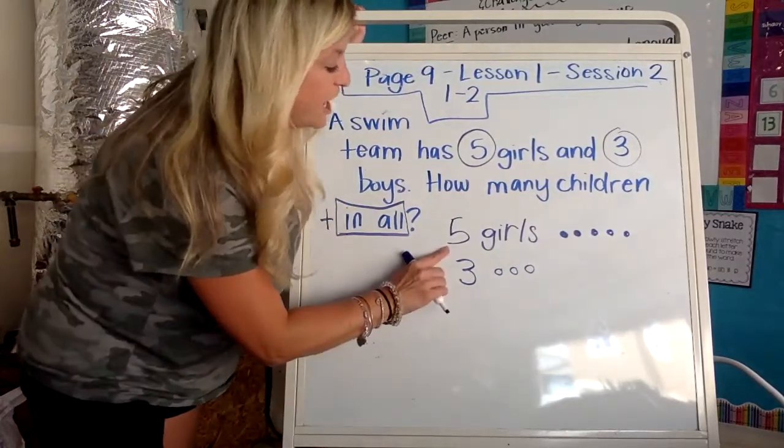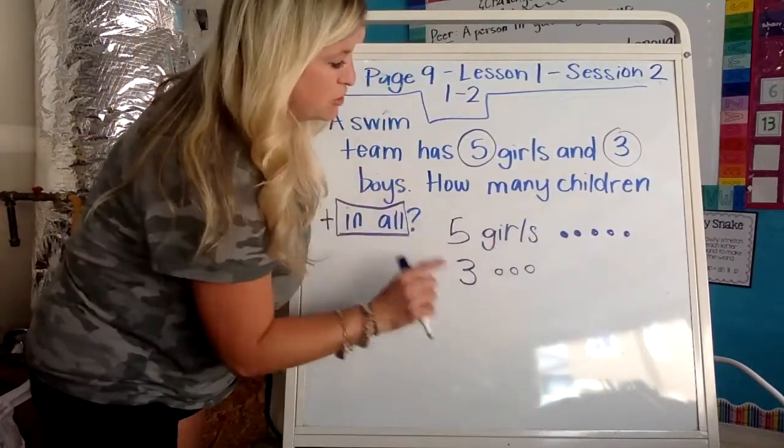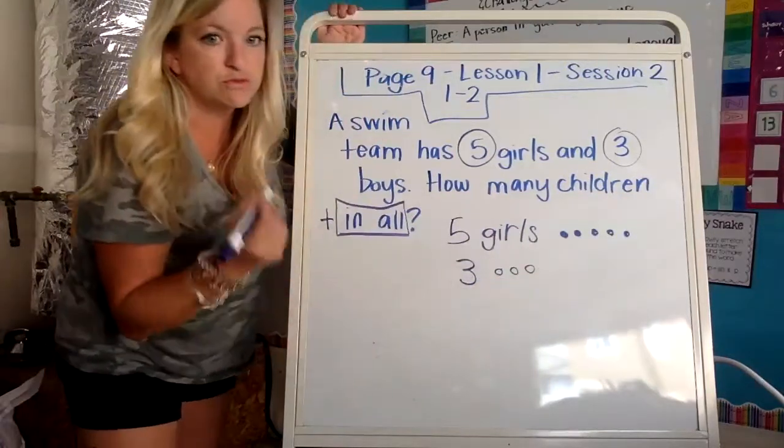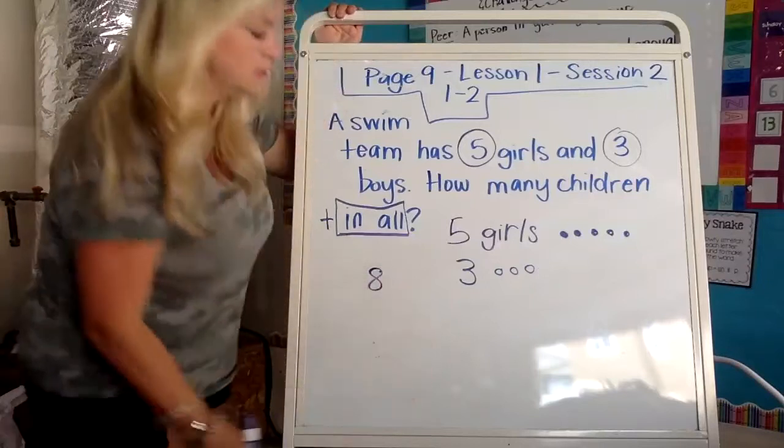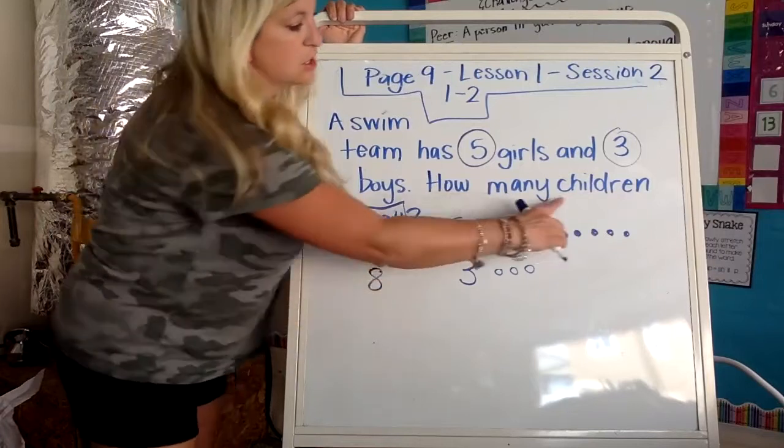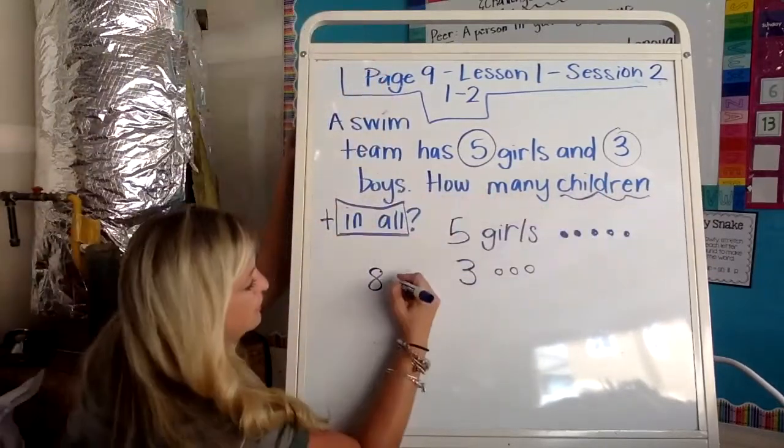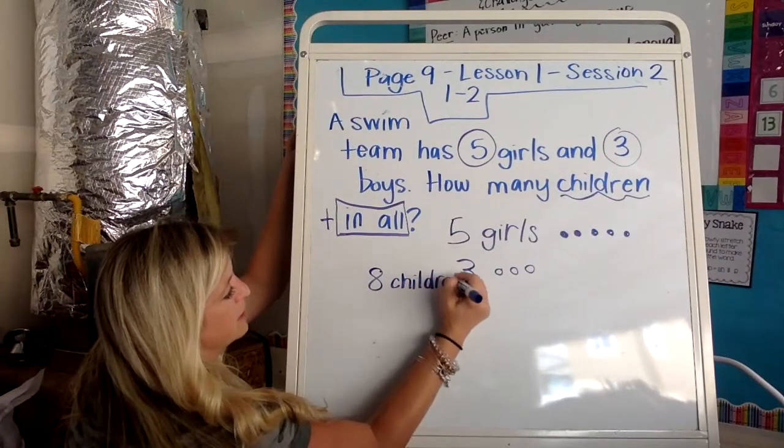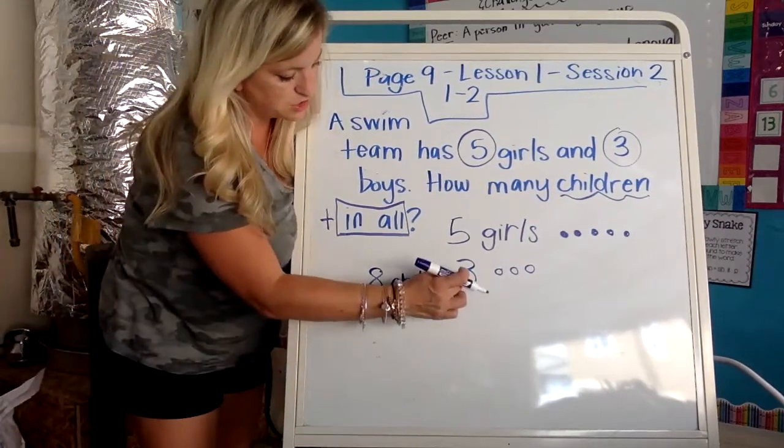So I'm going to count on five, six, seven, eight. So now I know I'm going to write eight. I can't just write eight. I have to tell you eight what? Eight children. So you're going to copy this word down. Eight children. And it kind of ran out of red. But the answer is eight children.